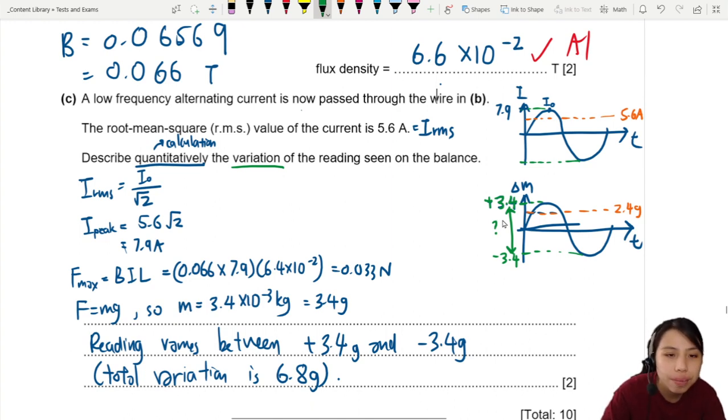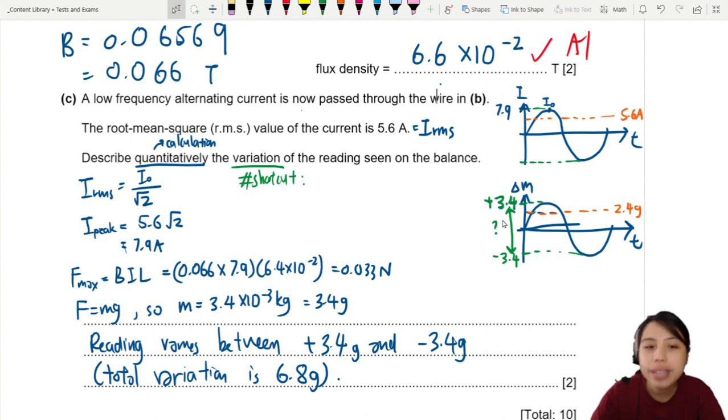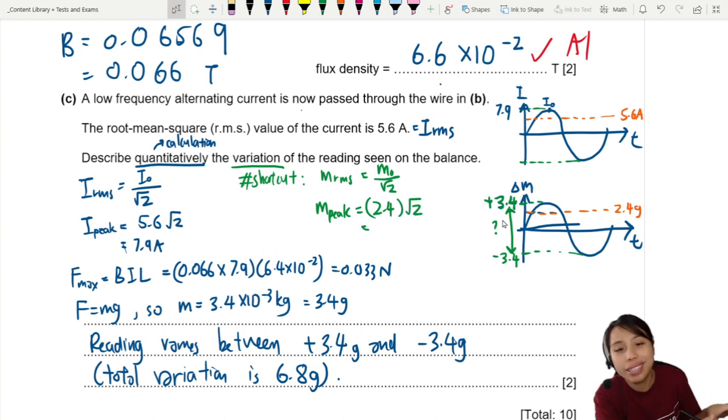So, the shortcut. Short shortcut. You want to find the 3.4 mass? Okay. Let's do mass RMS equals to mass peak over root 2. So we want to find the new peak. We just take the old mass which was 2.4 grams times root 2. What's the answer? 3.39 or 3.4.